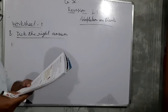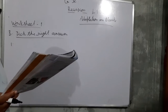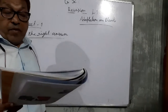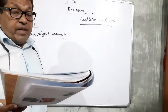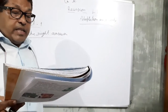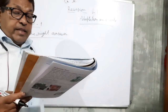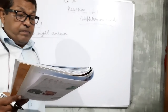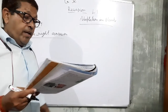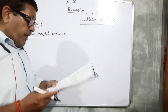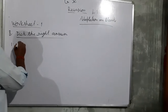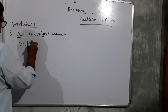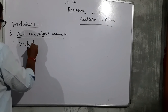First question: tall and straight trees with needle-like leaves are found — three options are given: on hills, in deserts, and in the plains. The answer here will be on hills.